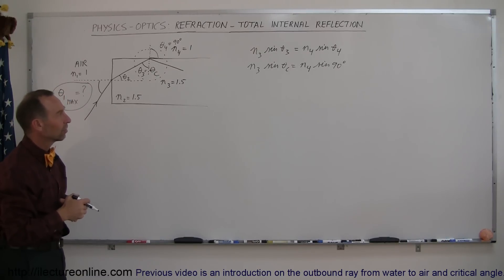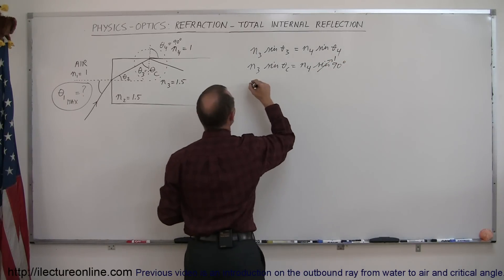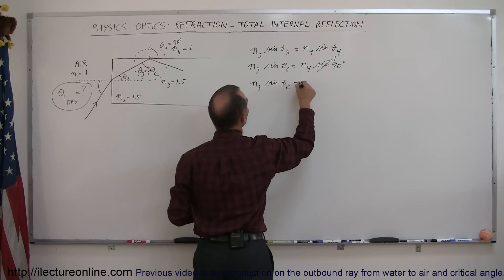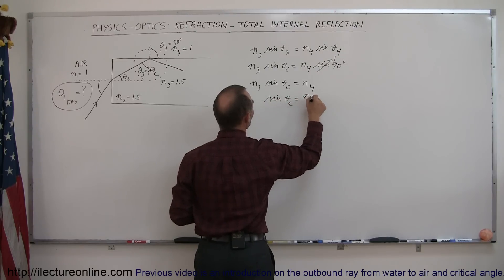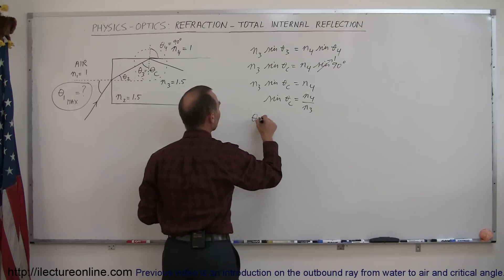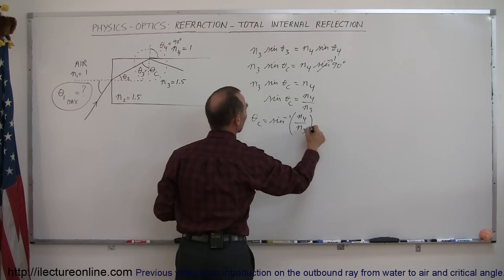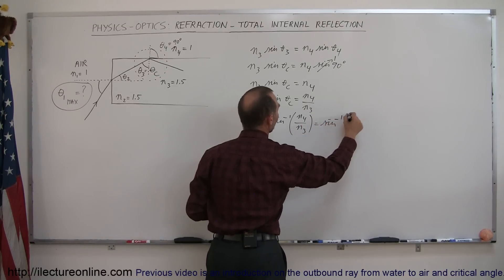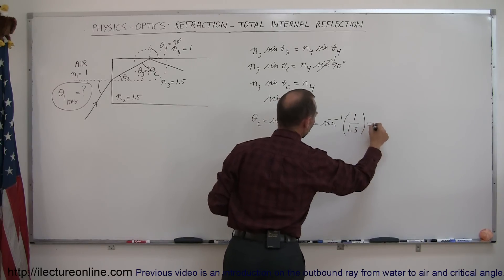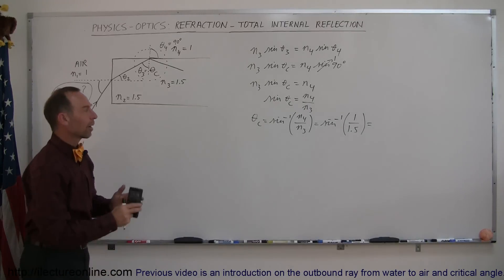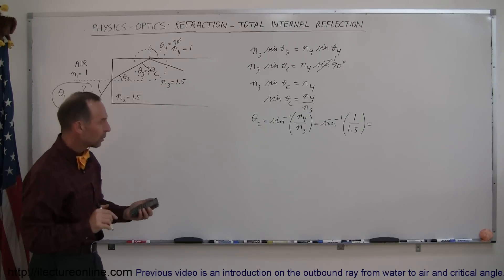Let's solve for theta sub c, which is theta sub 3. Since sine of 90 degrees equals 1, we get n sub 3 times sine of theta sub c equals n sub 4. Dividing both sides by n sub 3, sine of the critical angle equals n sub 4 over n sub 3. Therefore the critical angle equals arc sine of n sub 4 over n sub 3. Plugging in numbers — n sub 4 is 1 (air) and n sub 3 is 1.5 — that's the arc sine of 1 divided by 1.5, giving us 41.8 degrees.